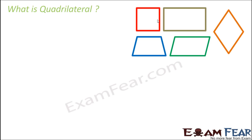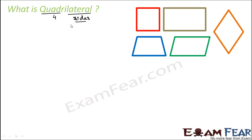The chapter is all about quadrilaterals. So what is a quadrilateral? Quadri means 4 and lateral means sides. So a quadrilateral is a polygon with 4 sides — that is the literal meaning of this word.